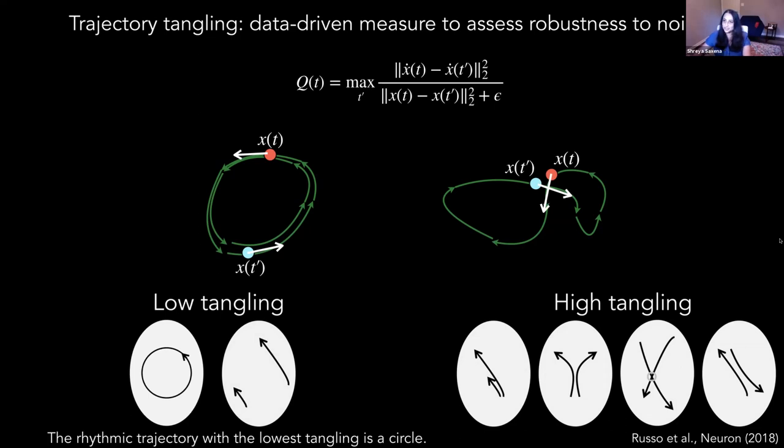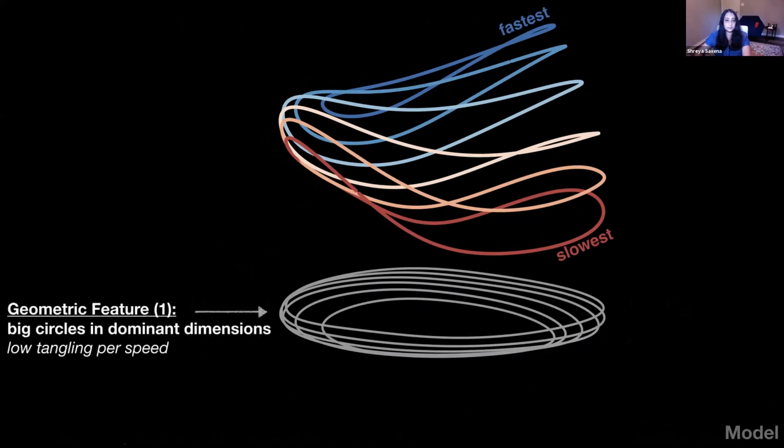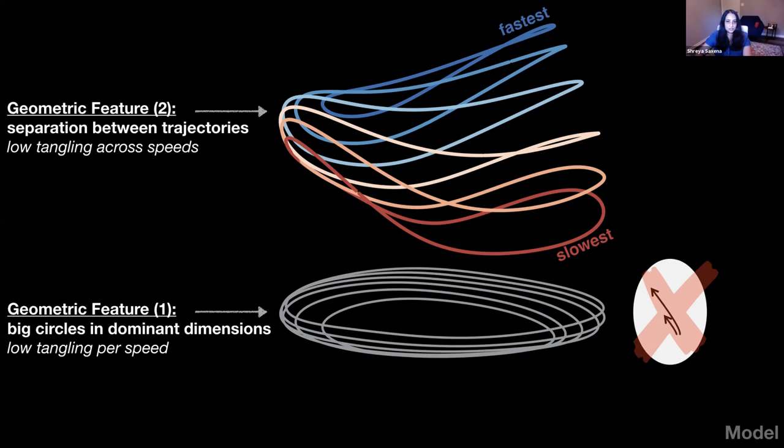So the important thing here is that this is a completely data-driven metric, as I said before. And the goal is to characterize the system through only the observed trajectories. So what does this tell us about the motor cortex and the muscles? We believe that the motor cortex has noise-robust dynamics, and thus that the motor cortex has low tangling. And in fact, the rhythmic trajectory with the lowest tangling is a circle. So that's our first prediction. So here, I'm showing you the network activity again, and this gives us a concrete reasoning for the first geometric feature of big circles in the dominant dimensions. Now, if these were the same big circle in high D space, we would have a tangling problem because we would have trajectories which have different derivatives but are very close in state. So we don't think that's happening either. And that leads us to our second geometric feature, that these circles are well separated in high dimensional space. So this gives us two concrete predictions for the data.